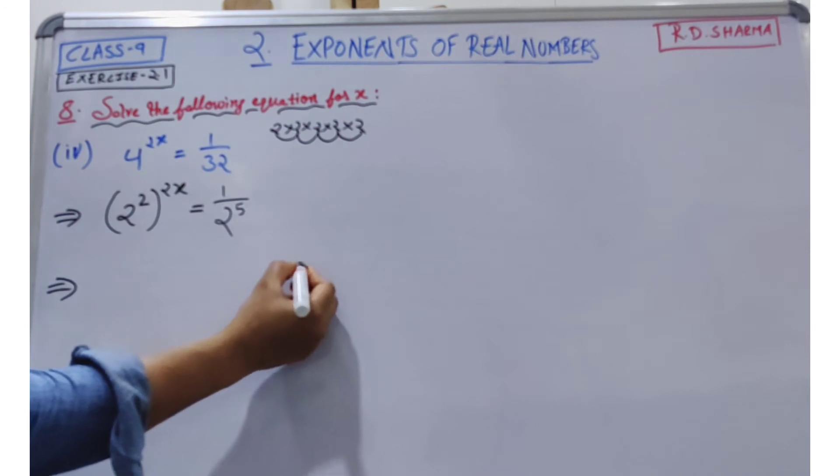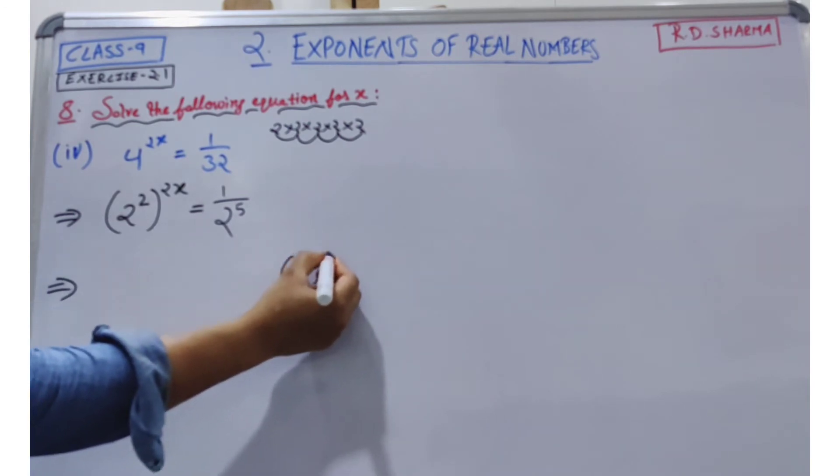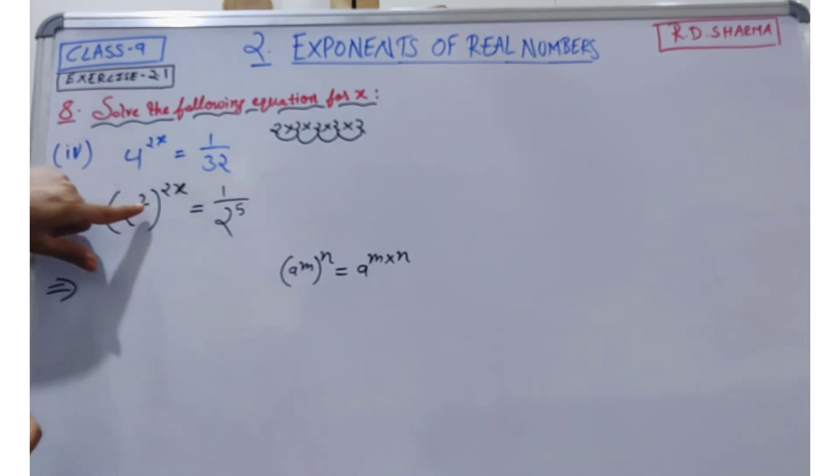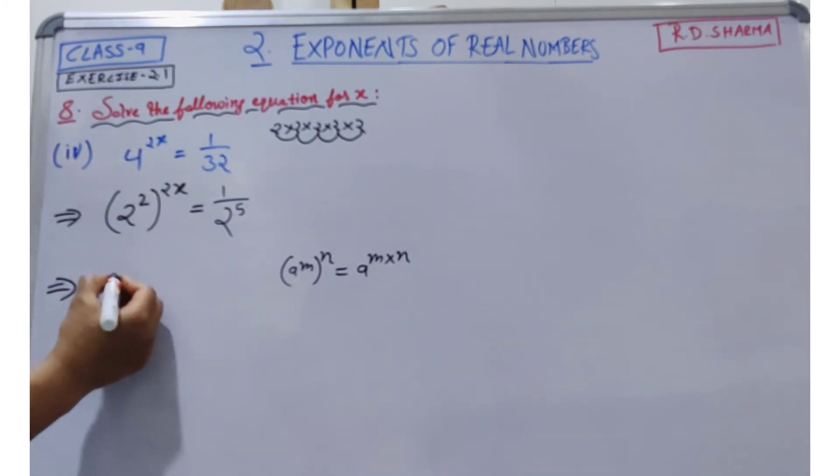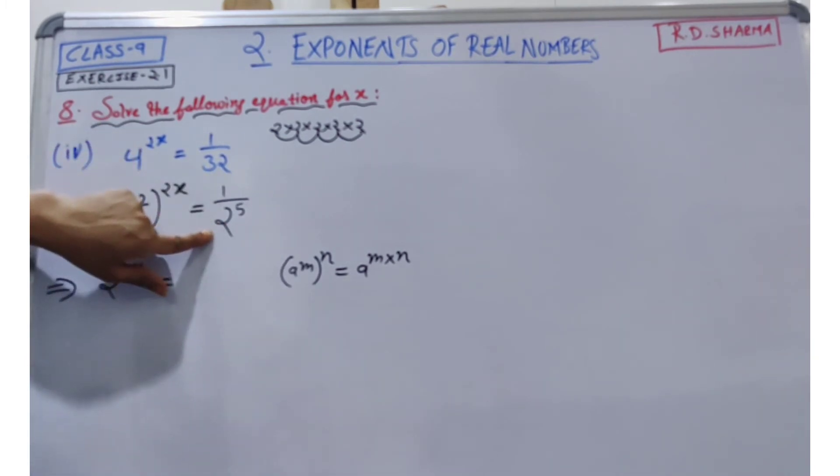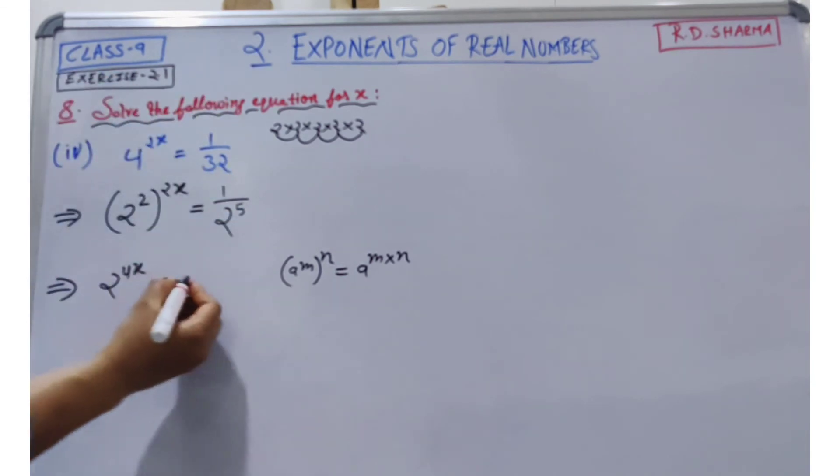According to our exponent rule, a to the power m to the power n, we can write as a to the power m times n. So here we have 2 times 2x, which gives us 4x is equal to 2 to the power negative 5.